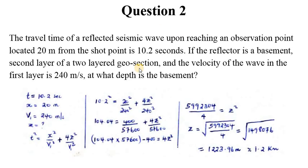We want to apply a theoretical formula that is used to relate travel time with velocities and depth. So in this case we are talking about t which is travel time as 10.2 seconds, x which is the distance between the shot point and the observation point on the horizontal surface, that is horizontal distance 20 meters, and v₁ as the velocity in the upper layer, that is 240 meters per second.